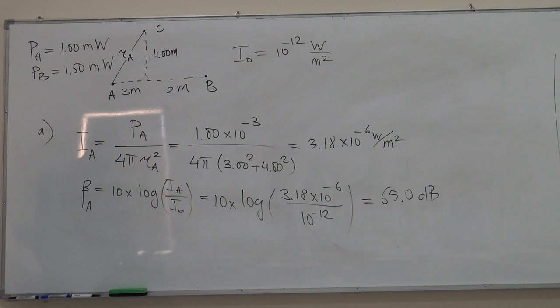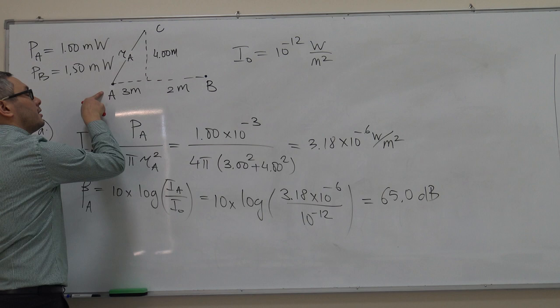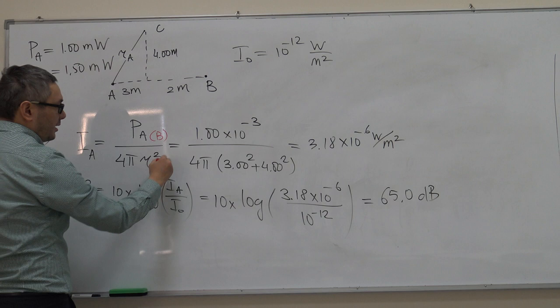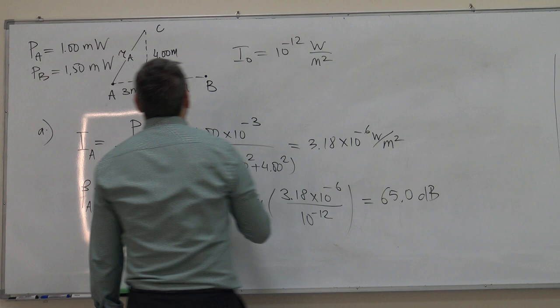Part B is asking what will be the loudness if only B is working and A is not working. The only thing that's going to change is that now instead of power for A, we're going to substitute power for B. Distance for A we're going to substitute by distance R_B.